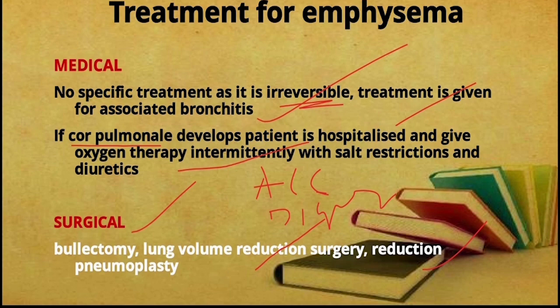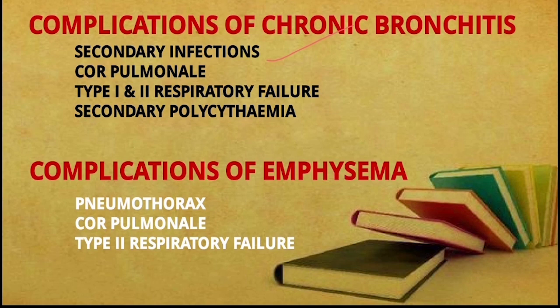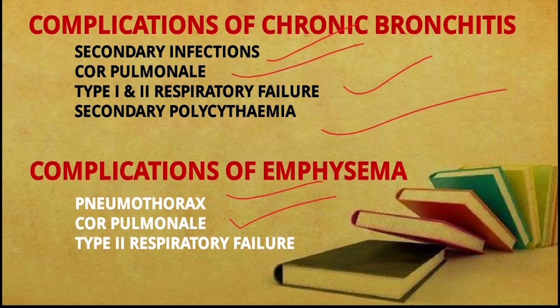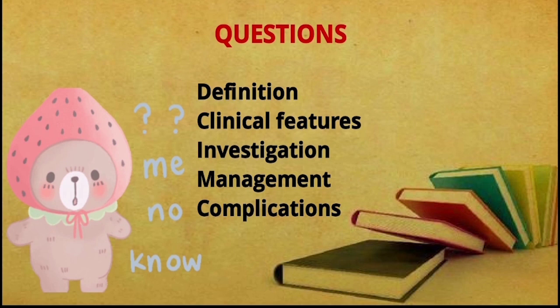Surgically for emphysema: bullectomy, lung volume reduction surgery, and reduction pneumoplasty for advanced diffuse emphysema. Complications of chronic bronchitis include secondary infections, cor pulmonale, and type 1 and type 2 respiratory failure. In type 1: low oxygen with normal-to-low carbon dioxide. In type 2: evidently low oxygen and elevated carbon dioxide. Secondary polycythemia is also a complication. In emphysema: pneumothorax from rupture of bullae into the pleural space, cor pulmonale, and type 2 respiratory failure.